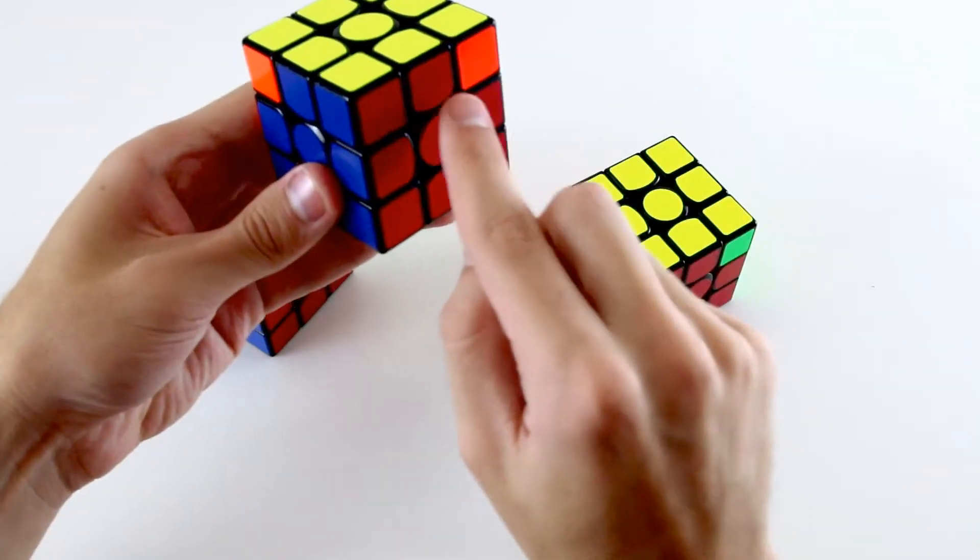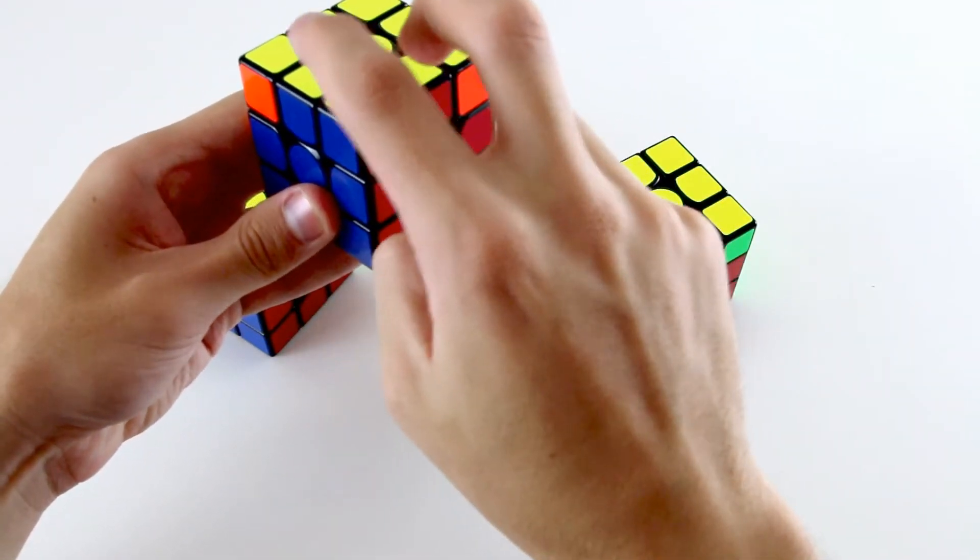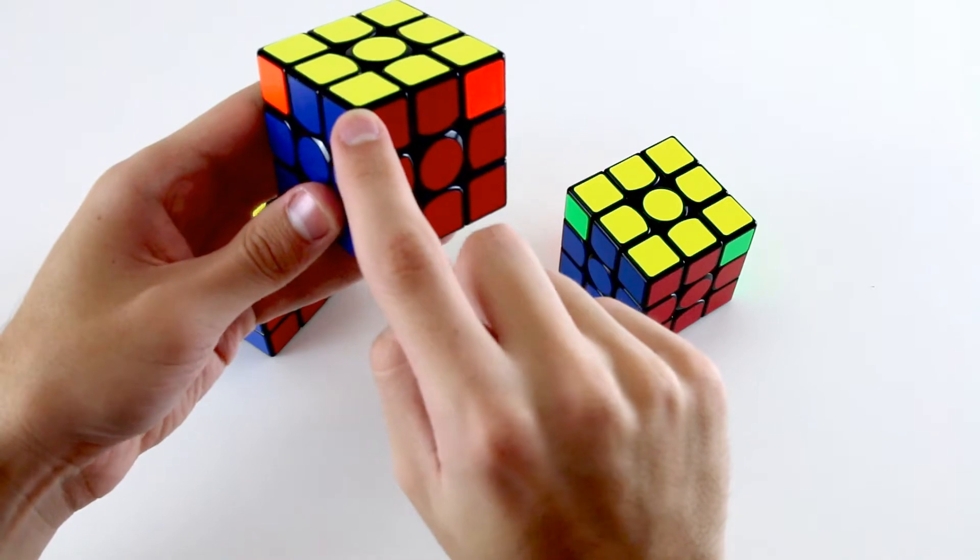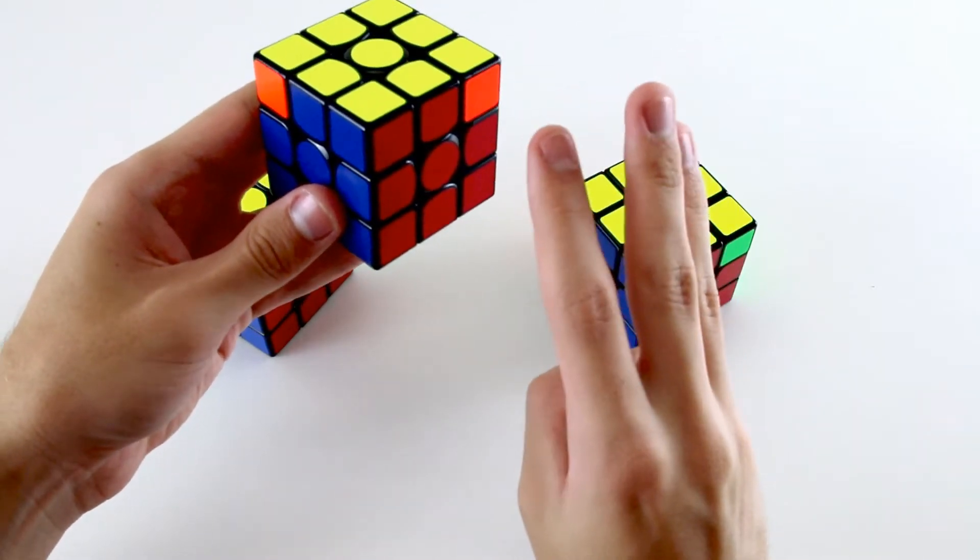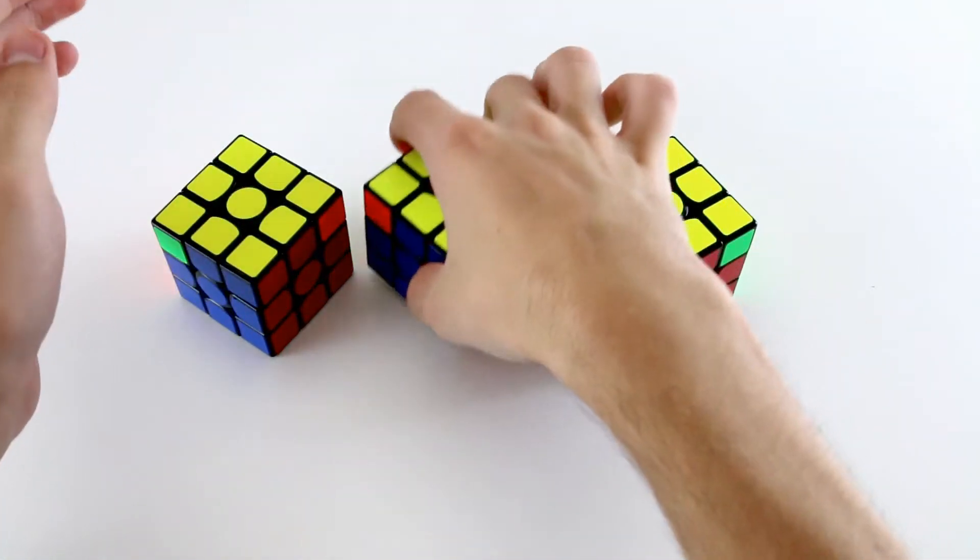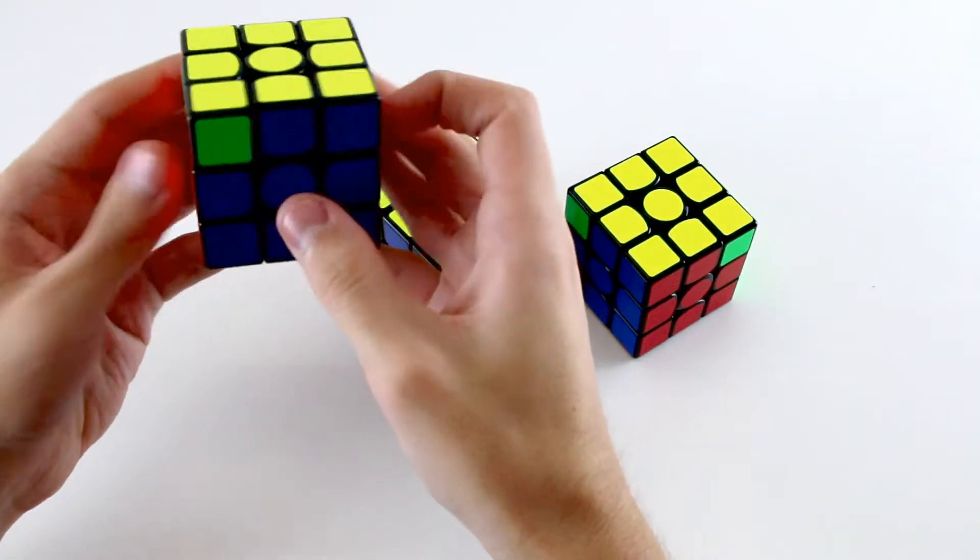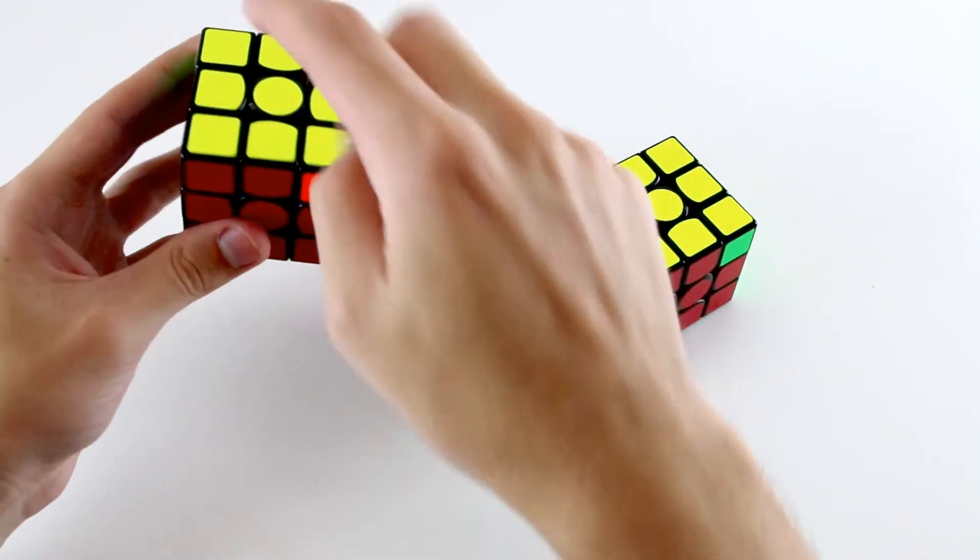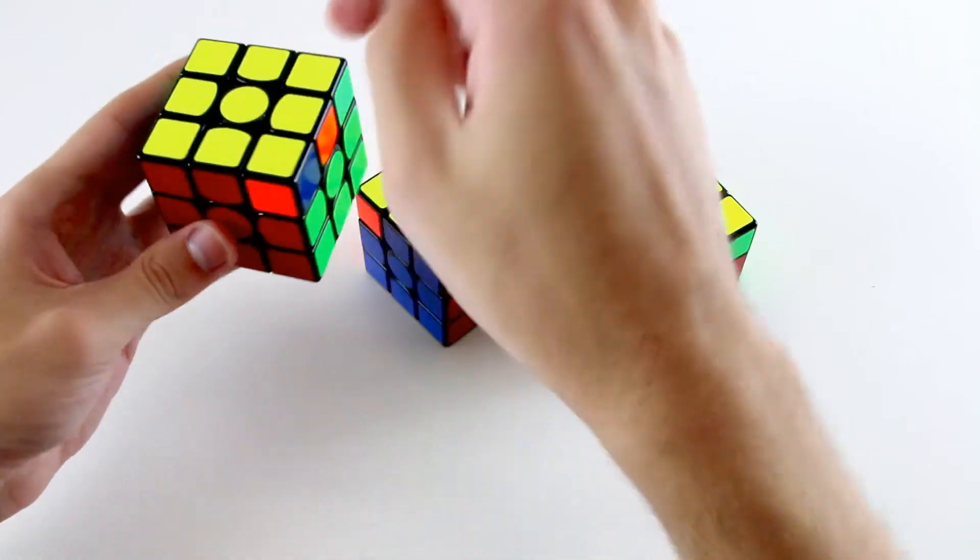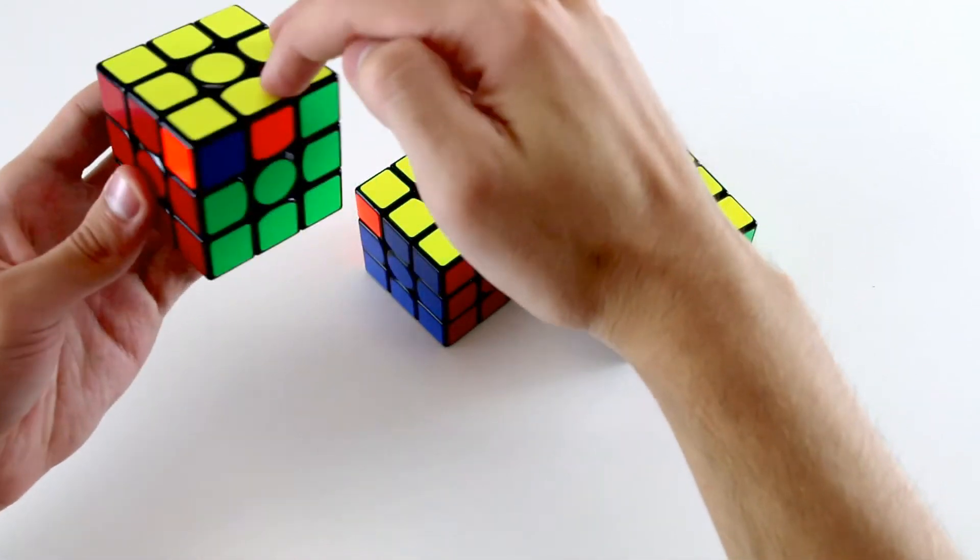So for example, for something like this where we have a block containing two edge pieces and one corner piece, there are three possible PLL cases that this can be. Either we have the V permutation, which looks like this, where you have two corners that need to be swapped diagonally like that and then two edges that need to be swapped there.